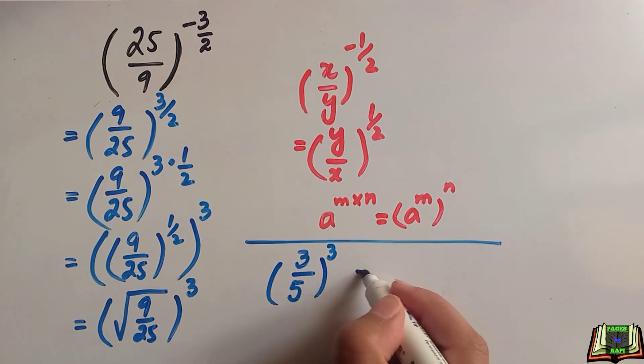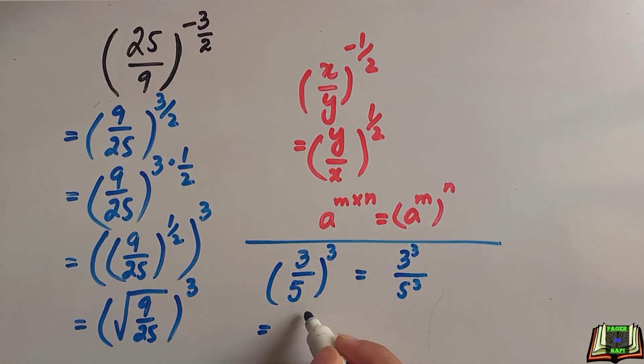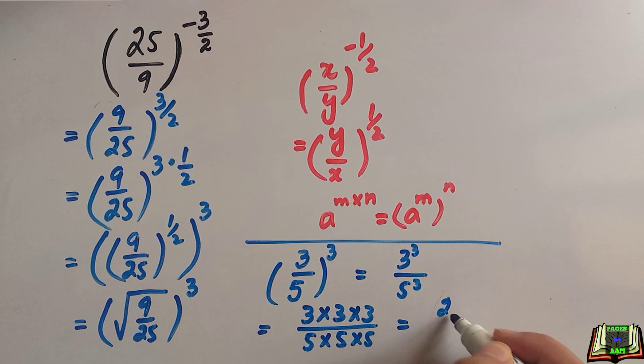Now we can write it as 3 to the power 3 over 5 to the power 3. 3 to the power 3 is equal to 3 times 3 times 3 and 5 to the power 3 is 5 times 5 times 5. 3 times 3 times 3 is 27 and 5 times 5 times 5 is 125.